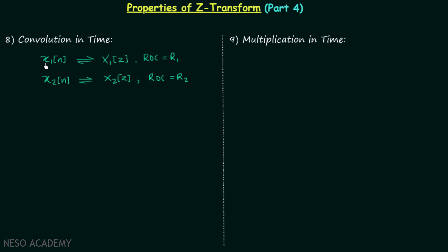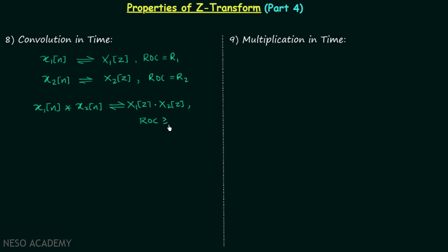Now if we convolve signal x1(n) and signal x2(n) — that is, if we perform convolution in time — we get the signal x1(n) convolved with x2(n). The Z-transform of this new signal will be X1(z) multiplied by X2(z), and the region of convergence will be at least R1 intersection R2. This property is called the convolution in time property, or equivalently, the multiplication in Z property.